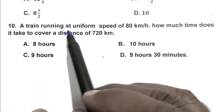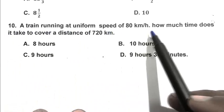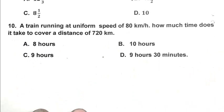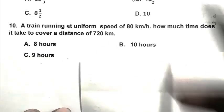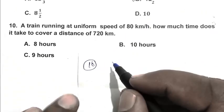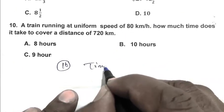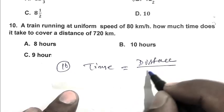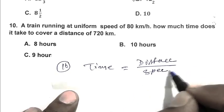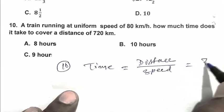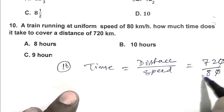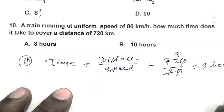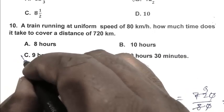Question number 10. A train running at uniform speed of 80 km per hour, how much time does it take to cover a distance of 720 km? So we can calculate it using the formula time is distance upon speed. That is 720 upon 80, which is 9. So time is 9 hours. So C is the right answer.